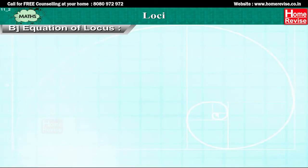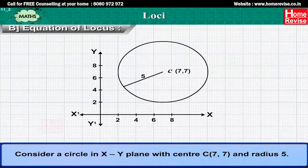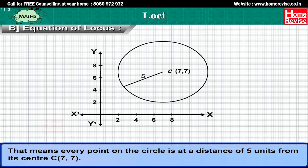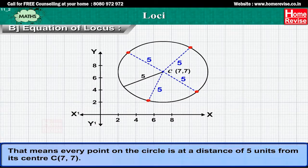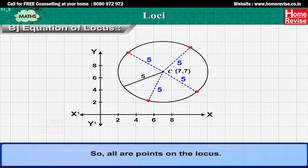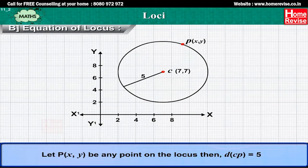Equation of locus: consider a circle in the XY plane with center C(7, 7) and radius 5. That means every point on the circle is at a distance of 5 units from its center C(7, 7), so all are points on the locus. Now let P(x, y) be any point on the locus. Then the distance CP is equal to 5.